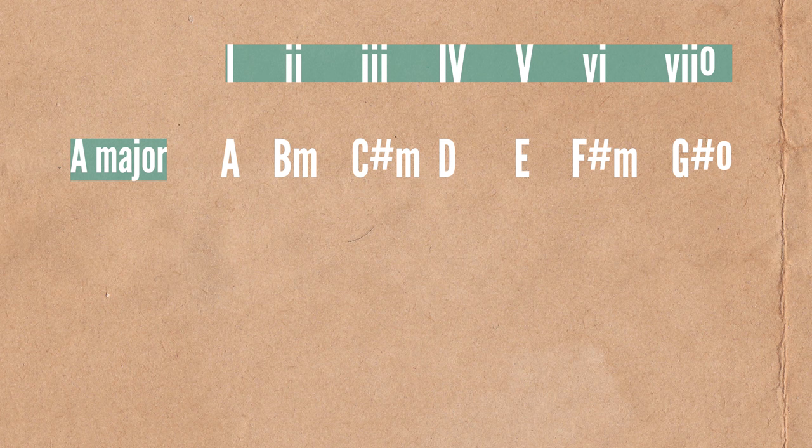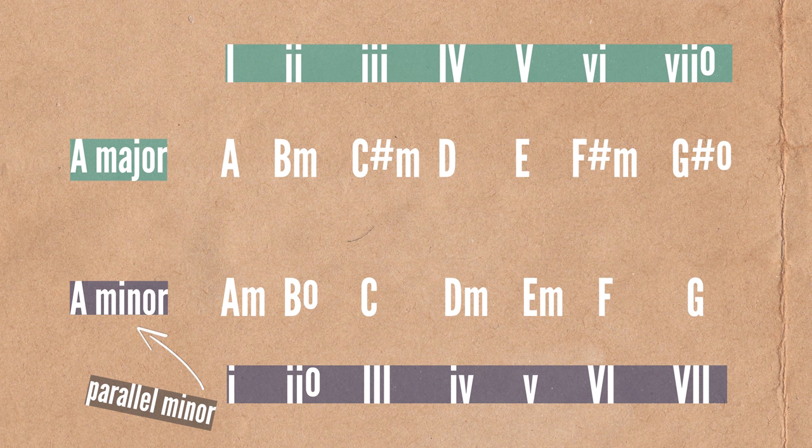That b7 chord can be called modal interchange, or a borrowed chord. It's when we take the 7th chord degree from the minor key and use it in our major key — a very common thing to do to spice up the sound. And if we learned something from the blues, it's that playing minor over a major tonality isn't wrong at all. If anything, it sounds more authentic and bluesy. So often you can solo over it as if it's a minor key.